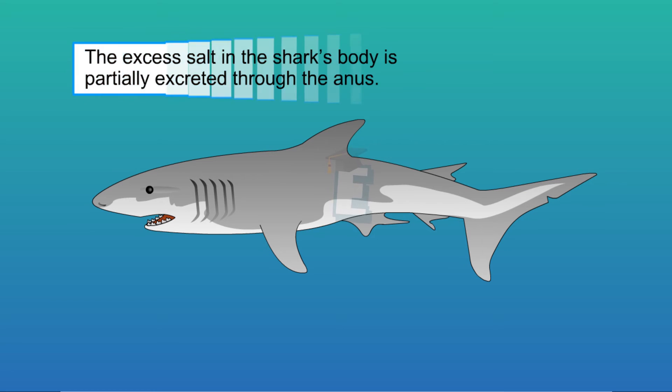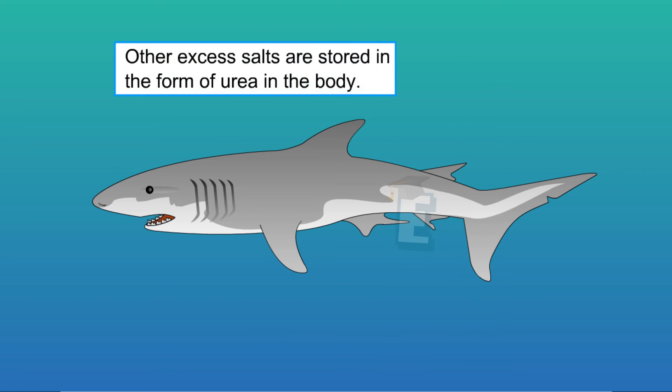Hence, the excess salt in the shark's body is secreted through the anus. However, this way is not enough. The shark stores the salt in the form of urea in their body. By this way, the shark can maintain its balance or homeostasis.